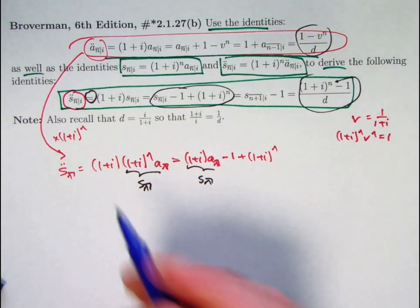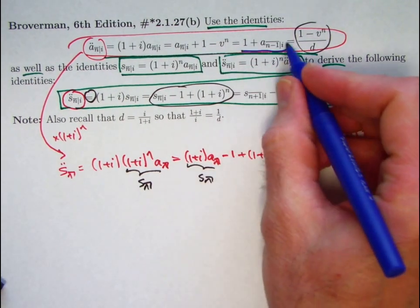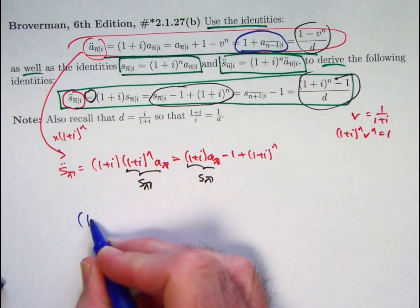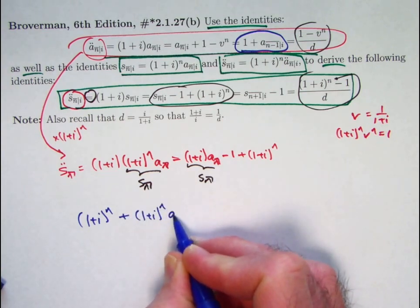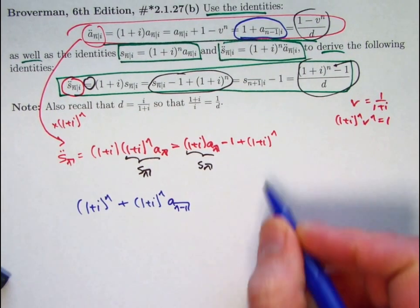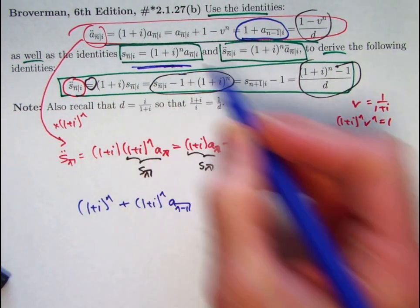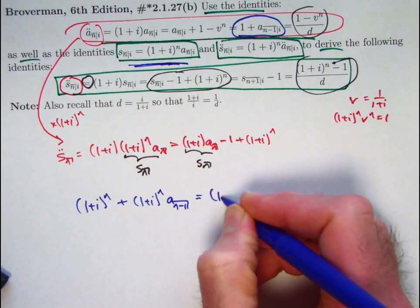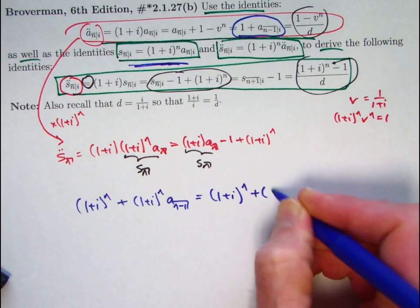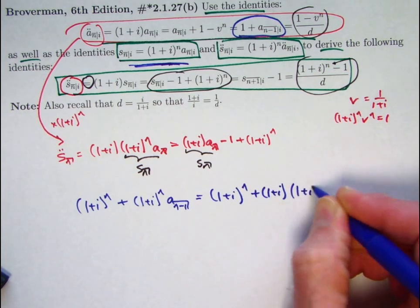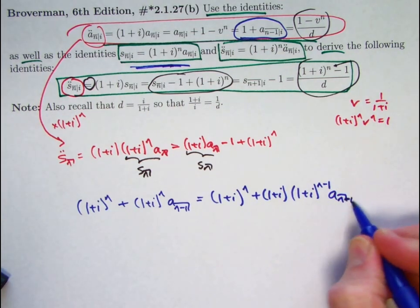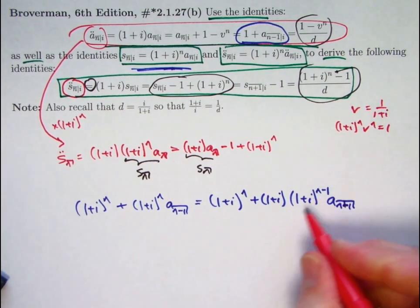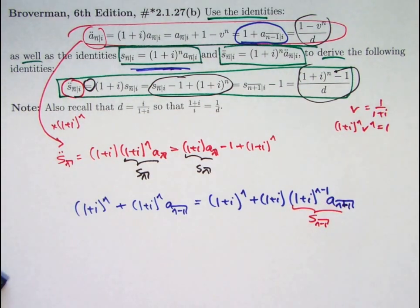All right, now we do the hardest one. 1 plus i to the n plus 1 plus i to the n times a_n minus 1. I want to make use of this identity here. That means I need to separate out n minus 1 of those factors like this. Now I can make use of that identity. This is supposed to be an n minus 1 here. This right here is s_n minus 1. But we're still not quite finished. We want to see that this expression equals this.